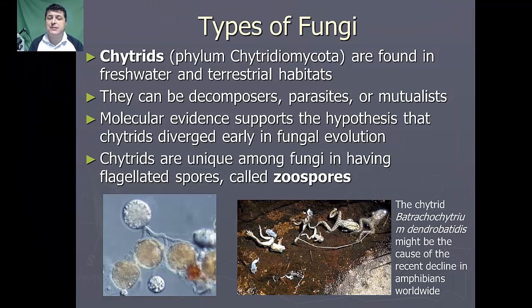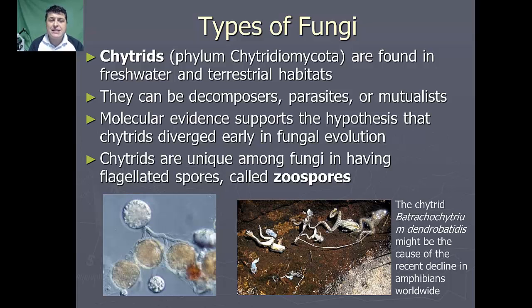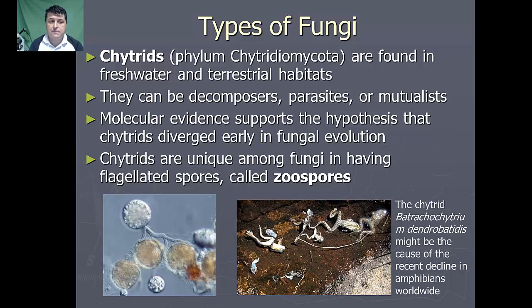There are several different types of fungi, and we'll briefly go through those. The first type is the chytrids. Chytrid fungi are found in freshwater and terrestrial habitats. They can be either decomposers, parasites, or mutualists. Molecular evidence supports the hypothesis that the chytrids actually diverged really early in fungal evolution, making them the most genetically unique of our fungi.